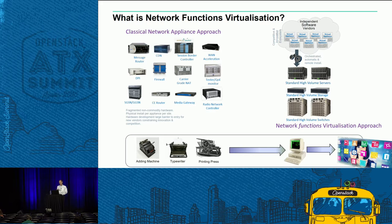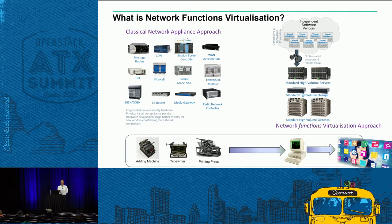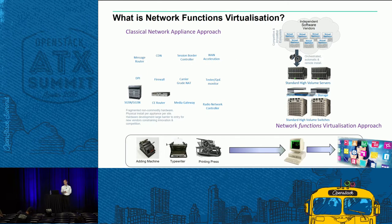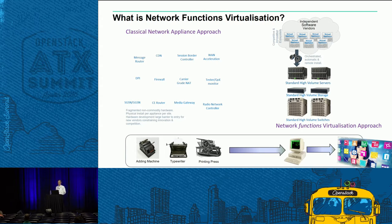There are lots of issues with that. So what we've said with network functions virtualization is: why do we need to do it that way? Why do we need to install all this physical stuff? Why don't we just run them as software on standard servers on the right-hand side of this diagram? Which is the sort of thing you'll be familiar with, so I don't have to explain the advantages. It's kind of the cloud model — I've made all the vendors' boxes disappear, and we run the software on the right-hand side.